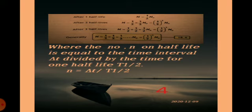After the first half-life N = (1/2)N₀, after the second half-life N = (1/2)²N₀, and after the third half-life N = (1/2)³N₀, which equals one-eighth of the original quantity. Generally, we can write the formula as N = (1/2)ⁿ × N₀, where n is the number of half-lives.